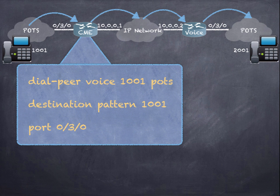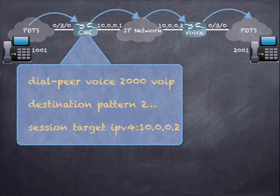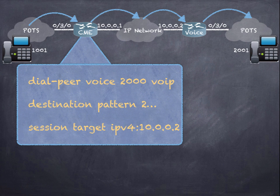The second dial peer moves the call from the CME router into the IP network. If I dial 2001 from the left phone, it matches the destination pattern — '2' is matched implicitly, and the three dots are wildcard placeholders for any digit 0–9. So 2222 or 2002 would all match this pattern. The call is then sent to the next hop — the next voice-enabled router at IP address 10.0.2 across the IP network. This is a VoIP dial peer.